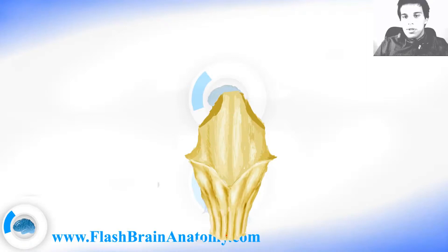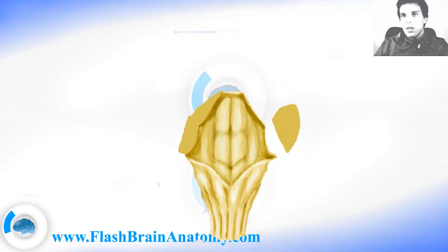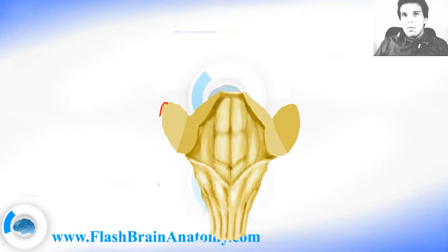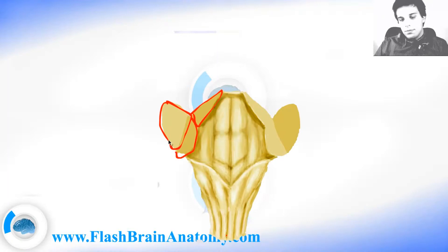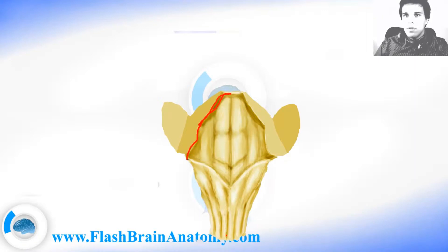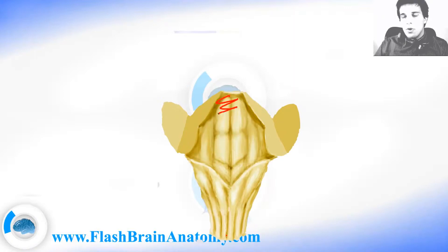The fourth ventricle is part of the ventricular system. There are cerebellar peduncles, which are simply bundles of nerve fibers that leave and enter the cerebellum. This is the middle cerebellar peduncle, this is the superior one, and this is the inferior one. They also create the borders of the fourth ventricle. I have created many videos about the fourth ventricle — check out flashbrainanatomy.com.